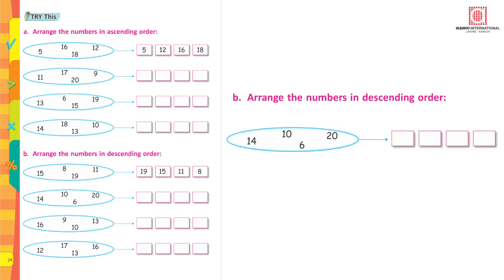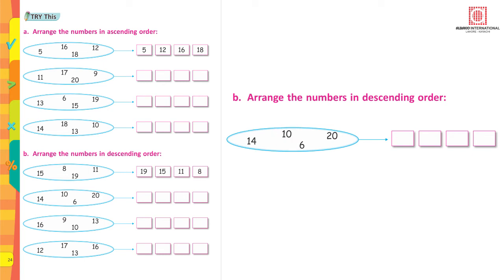Let's do the next together. How many numbers are here? 4. And what are those numbers? 14, 10, 6, 20. Which is the largest number here? Yes, 20 is the biggest. Now after 20, which is the next biggest number? 14. Then 10. Exactly. And 6 is the smallest. So in descending order, you are going to write the biggest number first — remember, descending order moves from biggest to smallest — so: 20, then 14, then 10, and in the end the smallest number, which is 6. Brilliant.